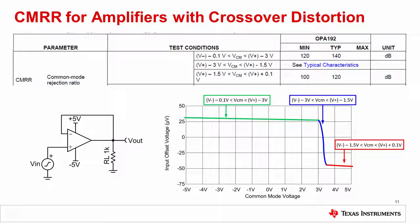Here, you can see the CMRR specification is broken into three regions corresponding to the three separate regions of operation. In the green region, the PMOS input pair is operating, and the common mode rejection in that region is typically 140 dB.